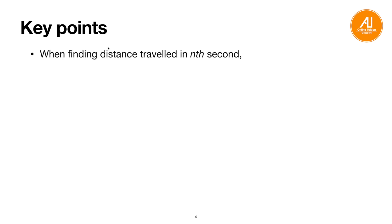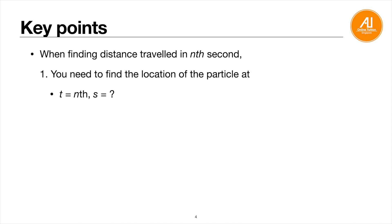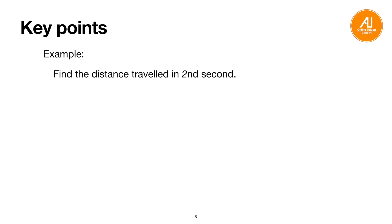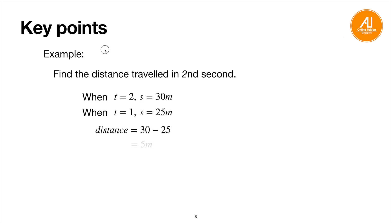When finding the distance traveled in the nth second, find the displacement at t = n and the displacement at t = n − 1, then subtract the two values. For example, if asked to find the distance traveled in the 2nd second: when t = 2, s = 30 m, and when t = 1, s = 25 m. So the distance traveled is 30 − 25 = 5 meters.